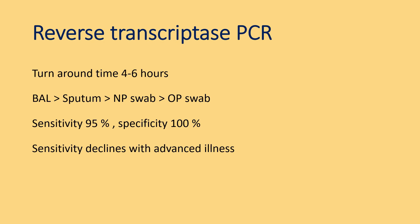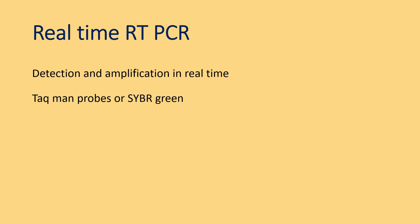BAL, sputum, nasopharyngeal, and oropharyngeal swabs are commonly used in RT-PCR. The sensitivity is about 95 percent and specificity is about 100 percent; sensitivity tends to decline with advanced illness. In real-time RT-PCR, detection and amplification happen simultaneously in real-time.